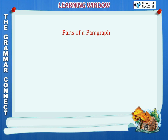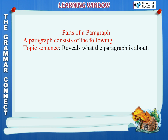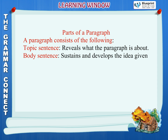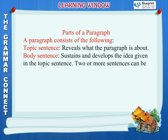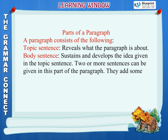Parts of a paragraph. A paragraph consists of the following. Topic sentence: reveals what the paragraph is about. Body sentence: sustains and develops the idea given in the topic sentence. Two or more sentences can be given in this part of the paragraph. They add some information or give examples.